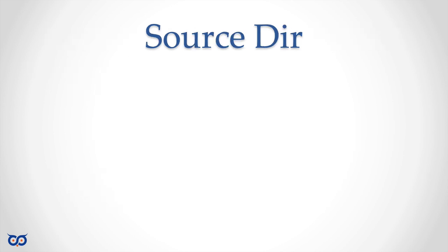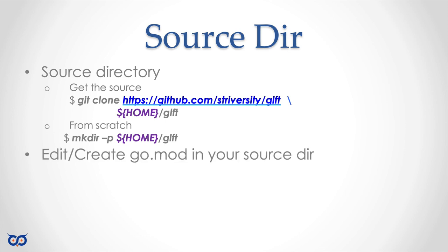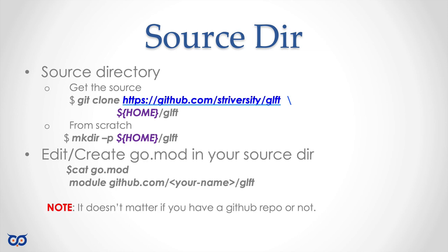Now let's talk about your source directory — where should it be? It can be anywhere on your operating system. If you installed Git, you can simply clone the code from GitHub. If not, if you want to develop things from scratch, you can simply make a directory and create a go.mod module file with the content: module followed by the module name. Note, it doesn't matter if you actually have a GitHub account or repository.